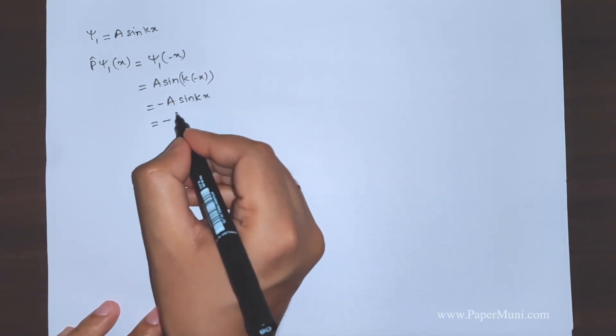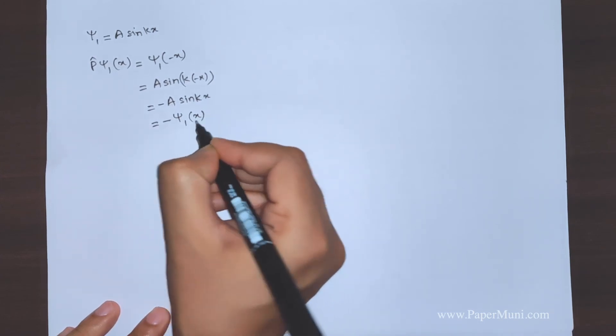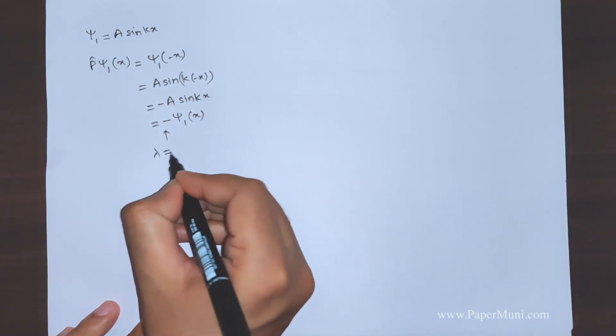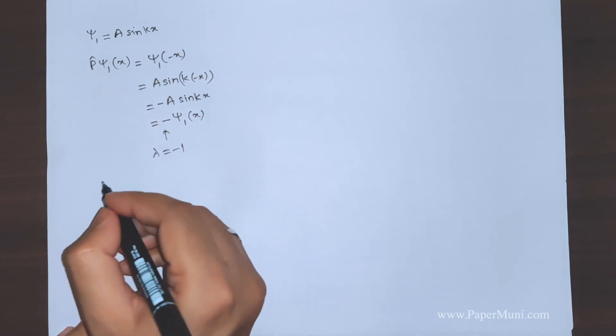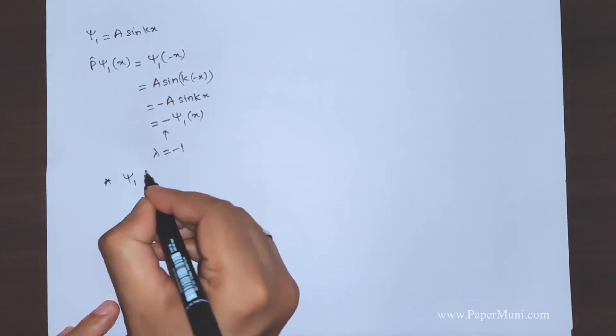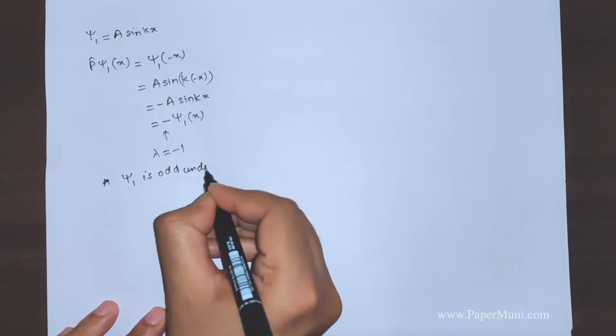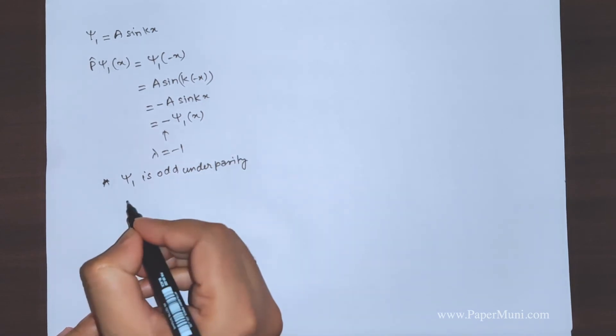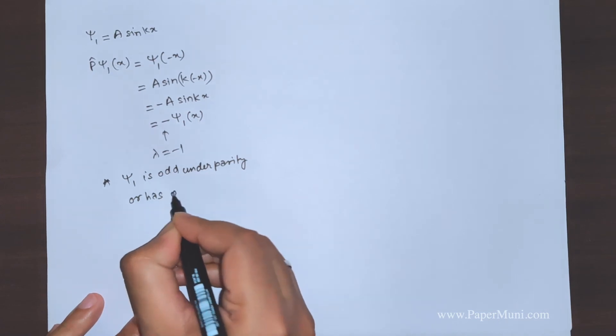Now this can be represented as -ψ₁(x), so the eigenvalue here is minus one. That means we'll say that ψ₁ is odd under parity, or has odd parity.